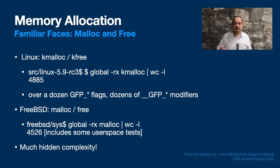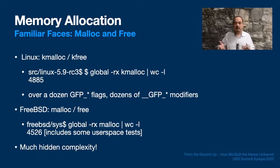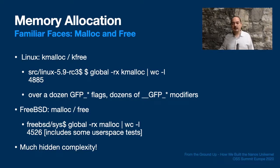Let's consider a primary function of any runtime system: memory allocation. If I was given the task to build a memory allocator for a new kernel, I might just stick to the interface most familiar to me — malloc and free. That's what other major OS kernels use. Linux uses kmalloc and kfree, FreeBSD uses malloc and free. Each have more than 4,000 calls to allocate alone, not including other interfaces for getting cached objects.